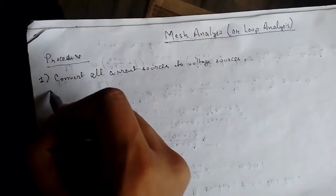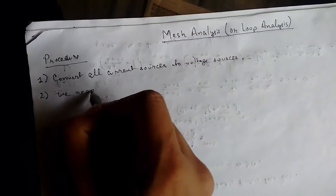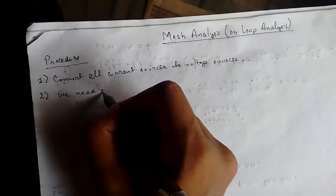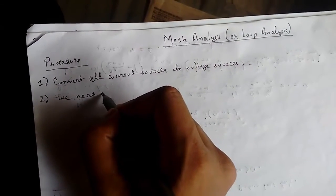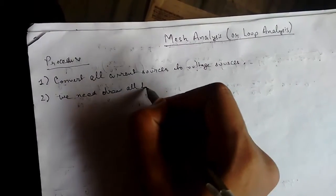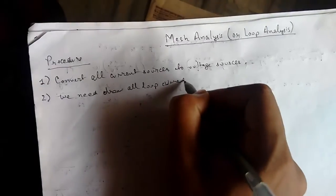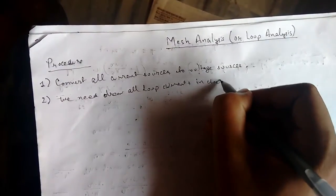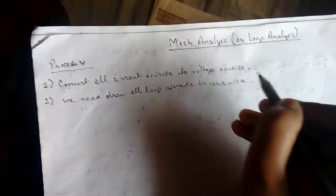Next, we need to assign or make loop currents. We need to draw all loop currents in clockwise direction.